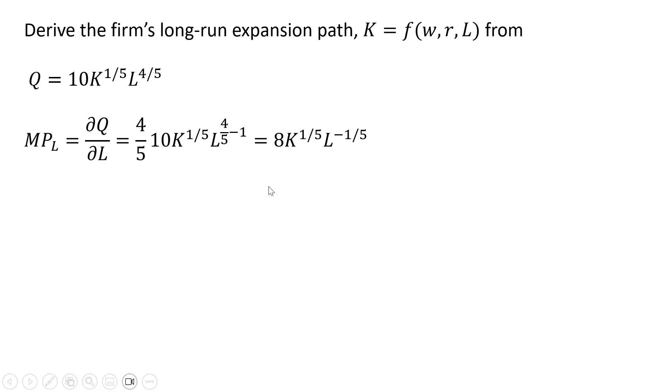Now let's get the marginal product of capital. Taking the partial derivative of the production function with respect to K, take the exponent here on the K term, bring that down in front, and then subtract 1 from that exponent on the K term. Doing some simplification, we get the marginal product of capital.